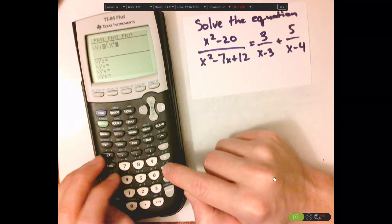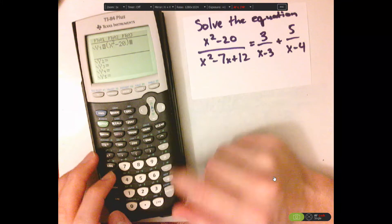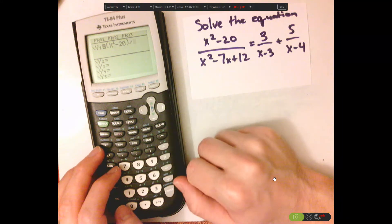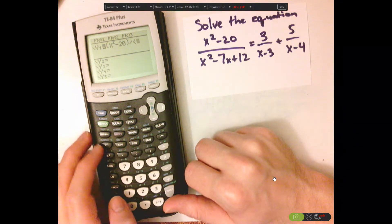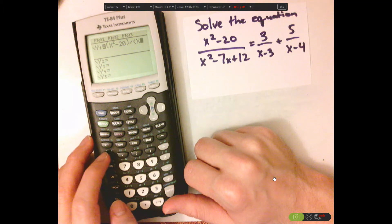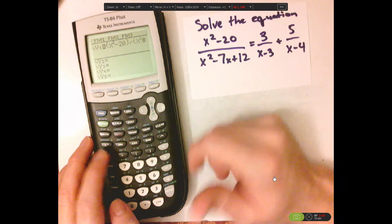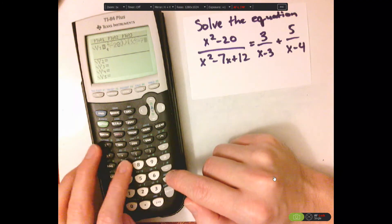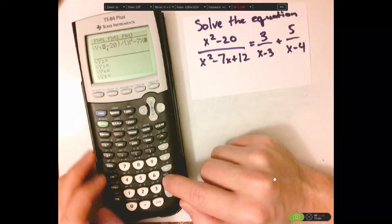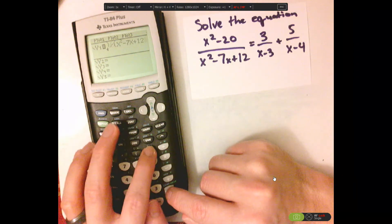variable x, squared minus 7x plus 12, closed parentheses.